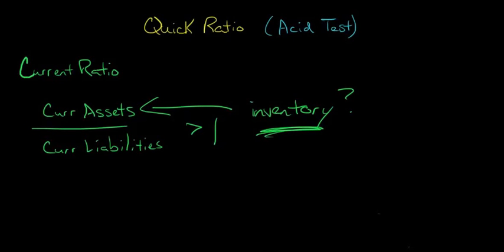If the firm can't sell the inventory, and the inventory is included in current assets, then the current ratio won't be the best measure of liquidity because unsold inventory can't be used to pay off these liabilities that are going to be coming due.